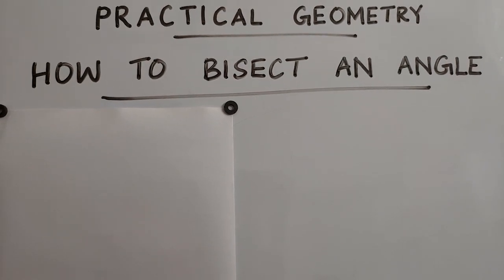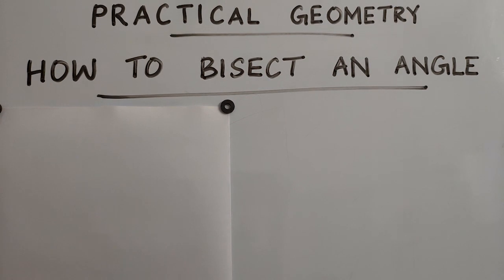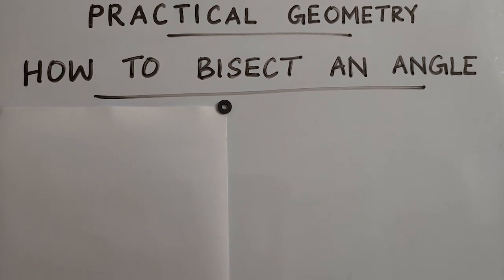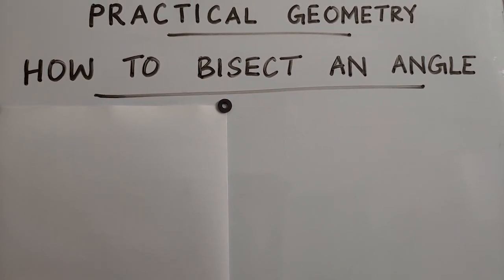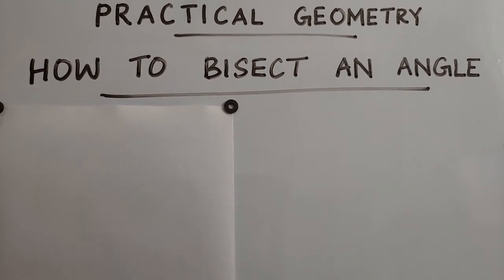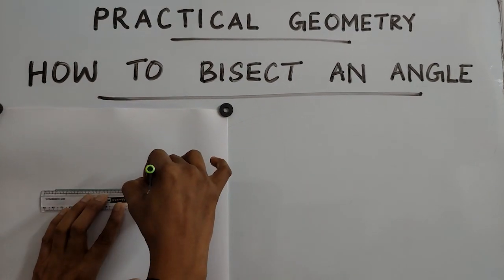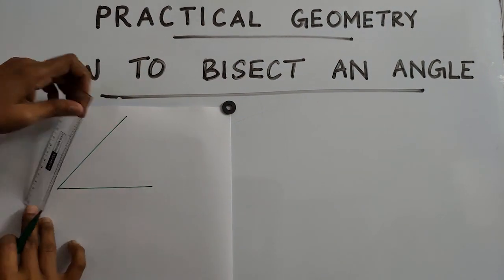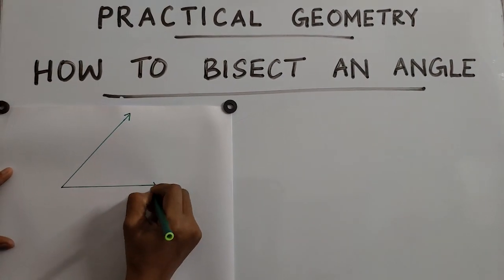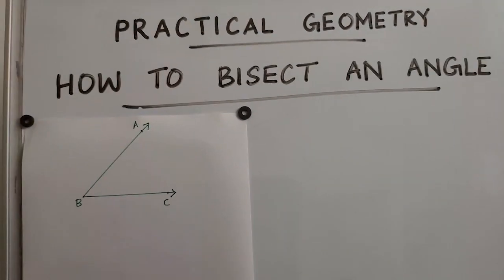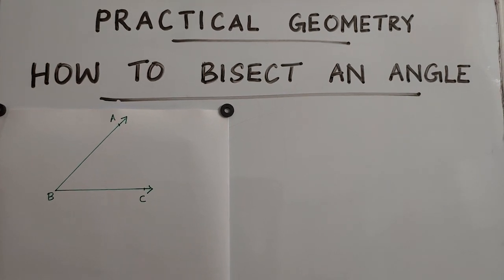Hi students, today we are discussing how to bisect an angle. For bisecting an angle, we can select any angle — whether it is acute, obtuse, or right angle. Here, first I am going to show how to bisect an acute angle. The same method is used for any angle. I am going to draw an acute angle without any measure. We know that an acute angle means between 0 degrees and 90 degrees. I am naming it as angle ABC.